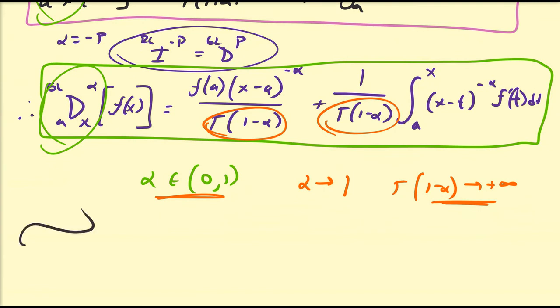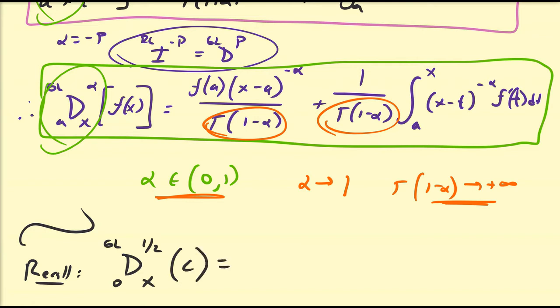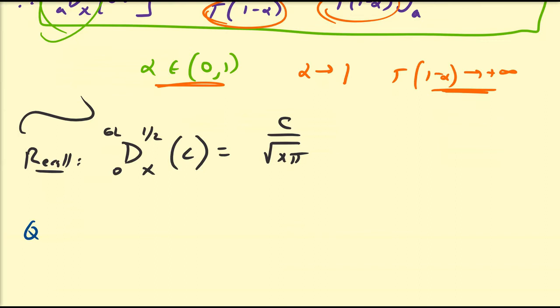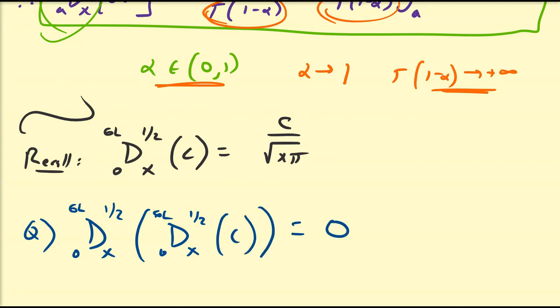Let's go through an example. Recall from a previous discussion that the Grünwald-Letnikov derivative of order 1/2 with base point 0 of a constant c was not equal to 0 — in fact it equaled c divided by the square root of x pi. The question is: is the Grünwald-Letnikov derivative of order 1/2 with base point 0 of that result equal to 0? Namely, does the property that the first derivative of a constant is 0 still hold for the Grünwald-Letnikov operator?